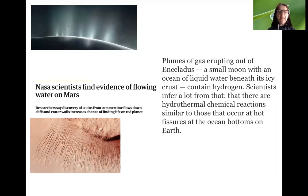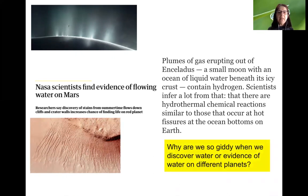We'll see excerpts from the media sharing some exciting findings. Scientists found evidence of flowing water on Mars, and evidence of gas erupting from Enceladus, a small moon with an ocean of liquid water beneath its icy crust — and these gases contain hydrogen. Scientists infer that there are hydrothermal chemical reactions similar to those in hot fissures at ocean bottoms on Earth. So why are we so excited when we discover water or evidence of water on different planets? Because we make a reasonable hypothesis that life on other planets will require water just like it does on Earth.